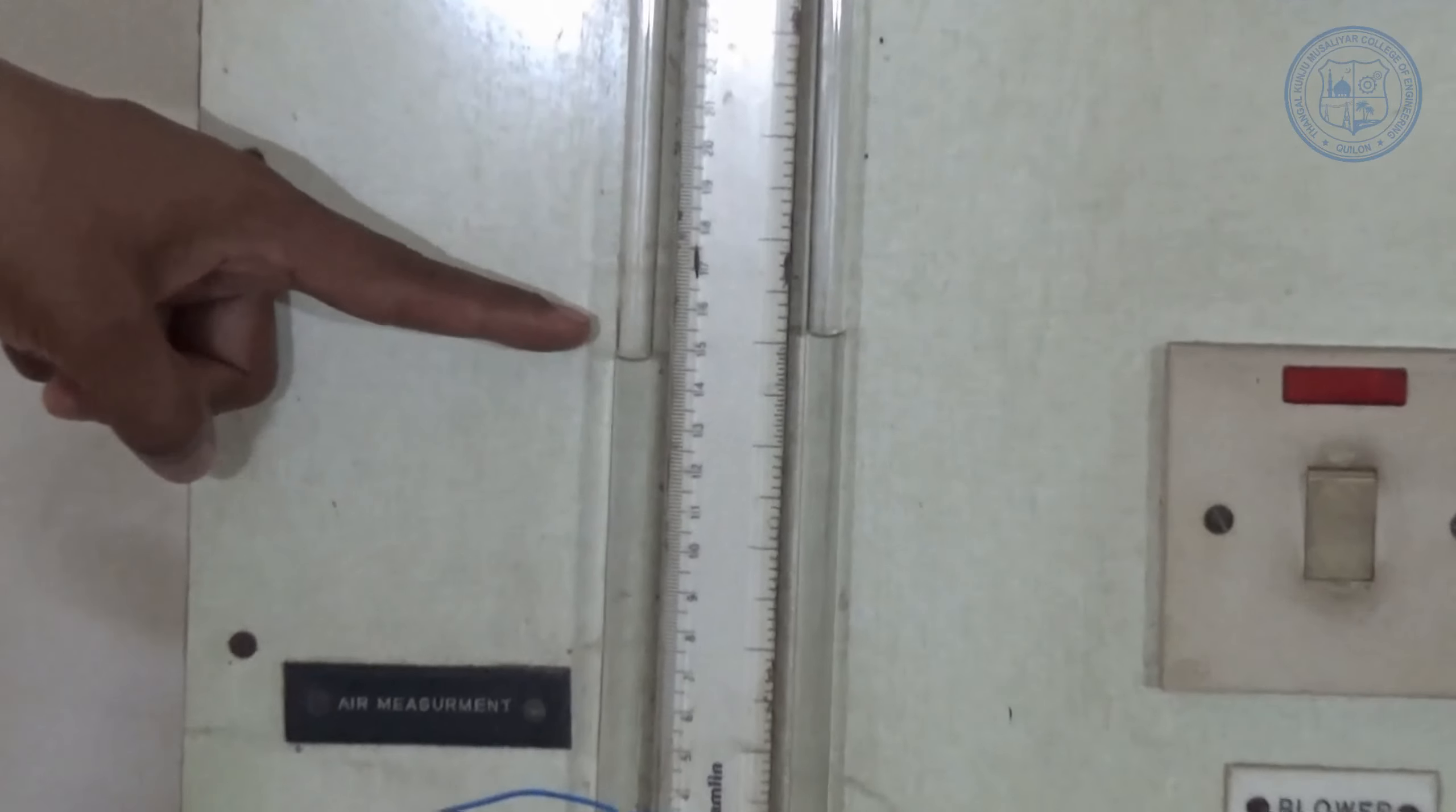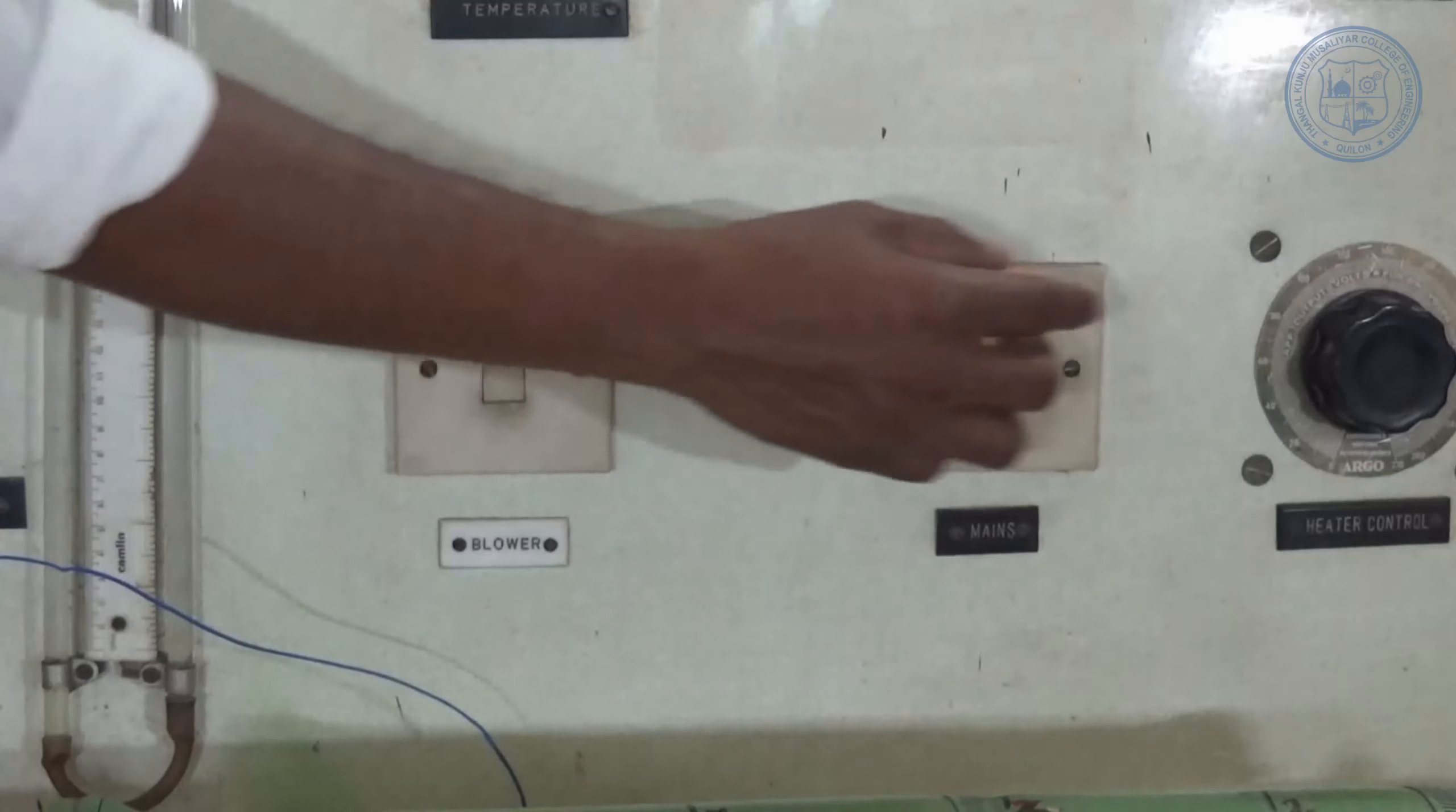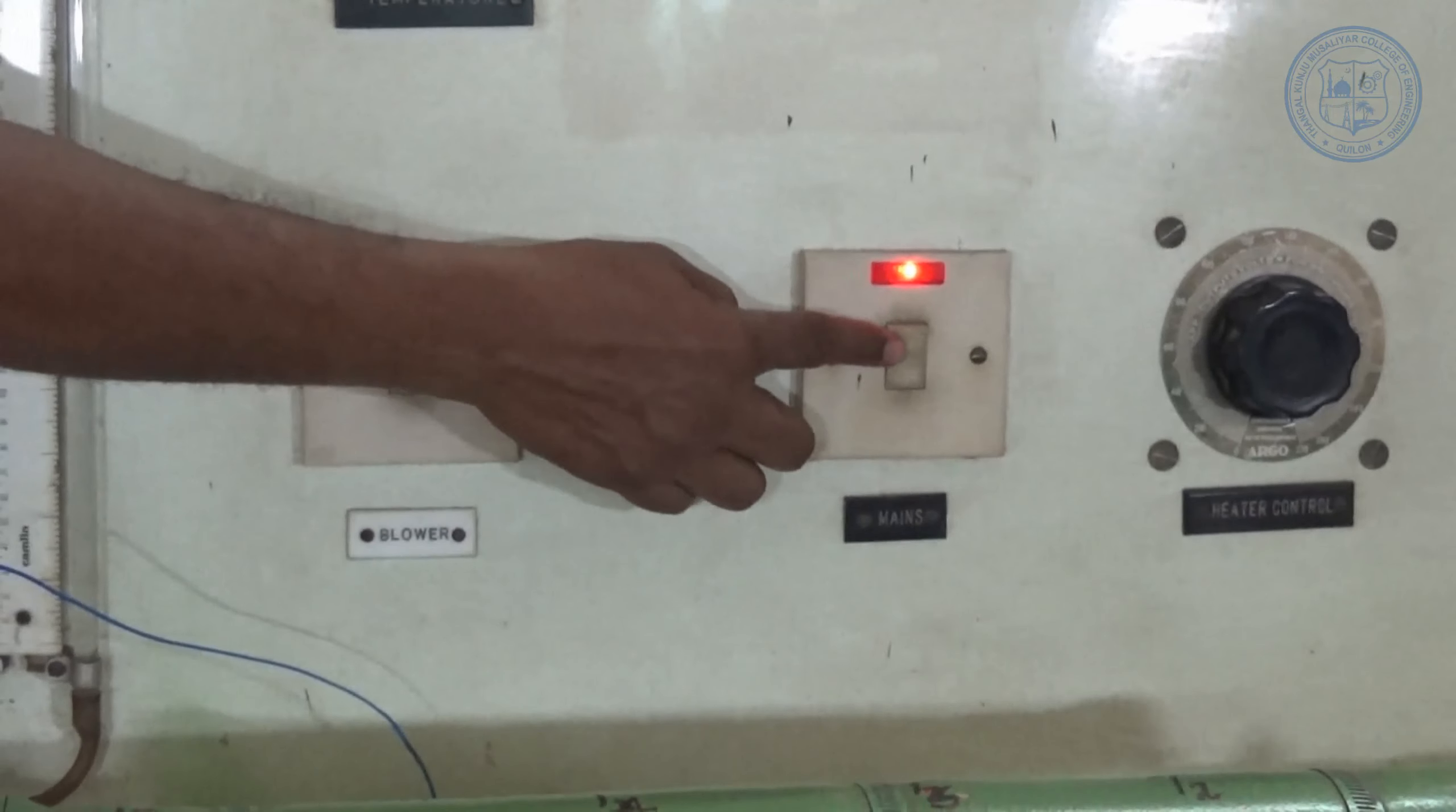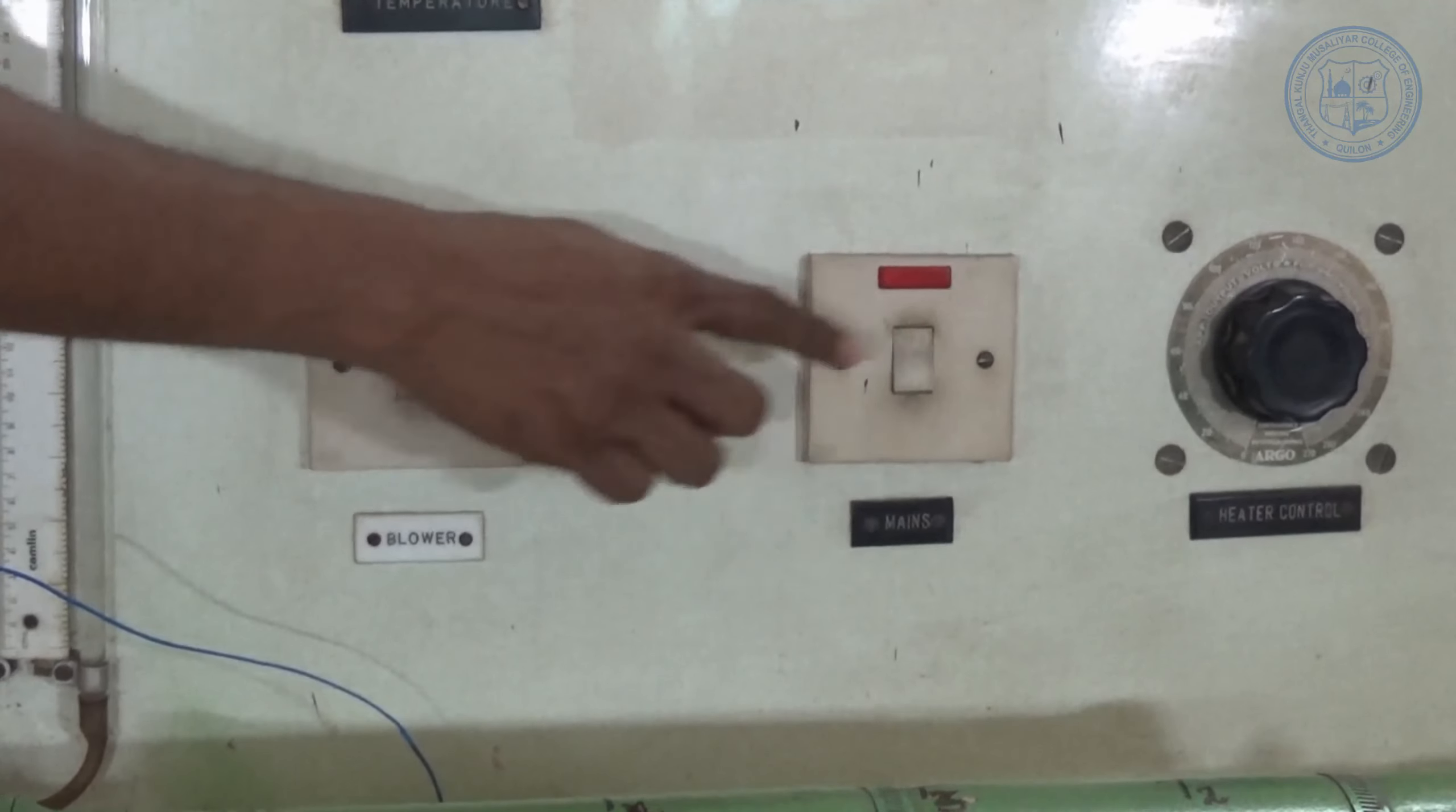After completing the experiment, close the delivery valve of the blower, then switch off the blower. Set the dimmer stat to 0 position and switch off the power supply. Thank you.